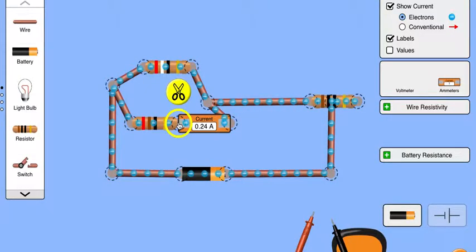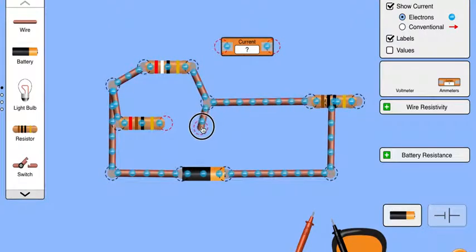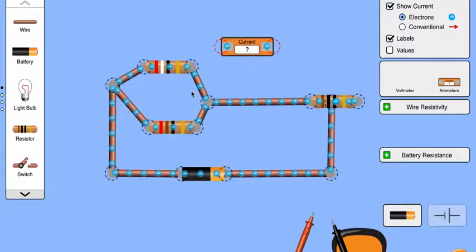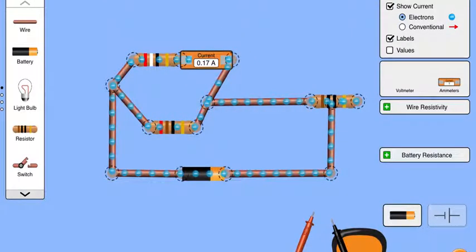Now I'm going to cut it. Remember you have to take apart the circuit in order to measure current. Now I'm going to do the same thing. Cut it up here, put the ammeter in. 0.17.